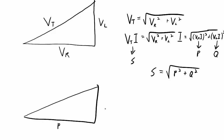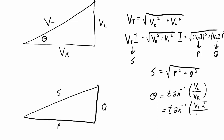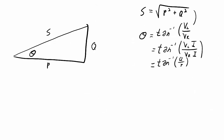The phase angle theta between voltage and current equals the inverse tangent of VL over VR. Multiplying both numerator and denominator by I doesn't change the ratio, giving VL·I over VR·I. The numerator is Q and the denominator is P, so theta also equals the inverse tangent of Q over P. That theta is the same in the power triangle as it is in the voltage triangle.